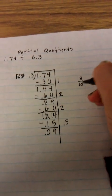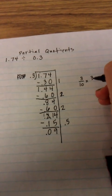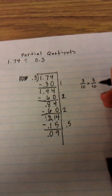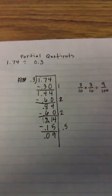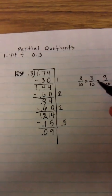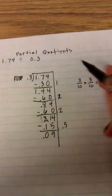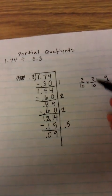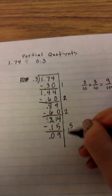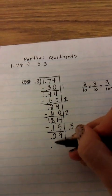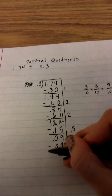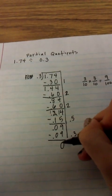that any time you do a tenth times a tenth, you always end up with a hundredth. 9 hundredths right here. So I know that if I multiply 3 tenths times another 3 tenths, I would get 9 hundredths. So I know that's what I need to multiply by. 3 tenths times 3 tenths is 9 hundredths. I subtract, and I have nothing left.